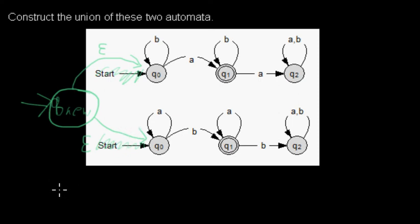And well, a small note. A union of those languages is also denoted as this one. So this is the language of our initial first automaton, and that's the language of our initial second automaton. And this is the union of those both.